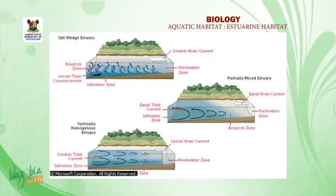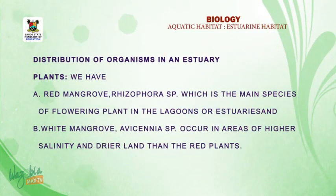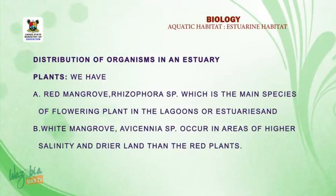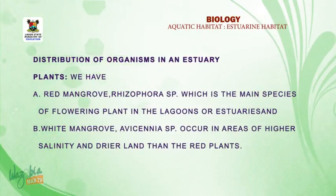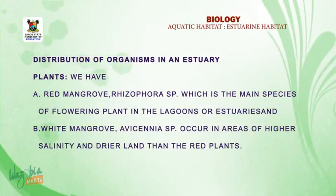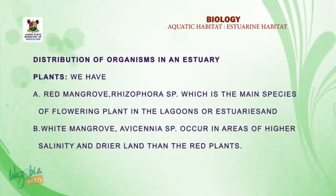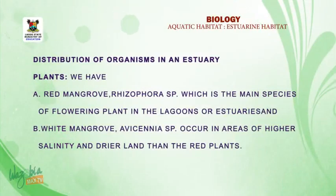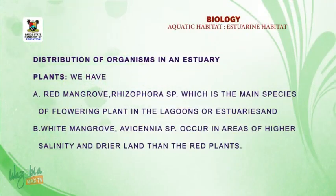Now let's look at the distribution of organisms in an estuary. Under plants, we have red mangrove — Rhizophora species — which is the main species of flowering plants in the lagoon. The second plant is white mangrove — Avicennia species. Avicennia species occur in areas of high salinity and dry land compared to the red mangrove.